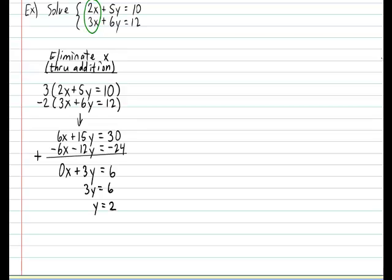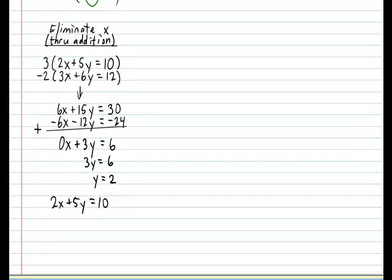all you have to do is plug the y value into either of the original rules, and then isolate your x. So let's get that done. Let's just use the first rule. The first rule being 2x plus 5y is equal to 10. So let's plug in the y.